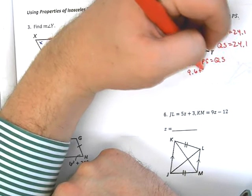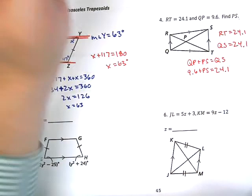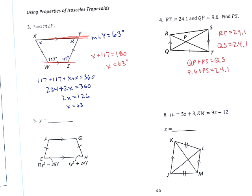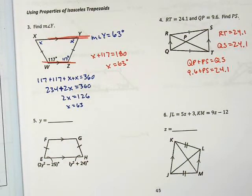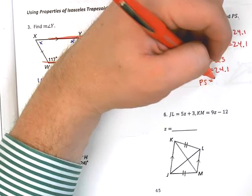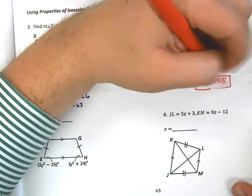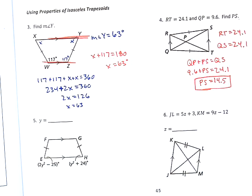Right? Perfect. So, 24.1 minus 9.6, and I'm getting that PS must equal 14.5, and that is what we were looking for.